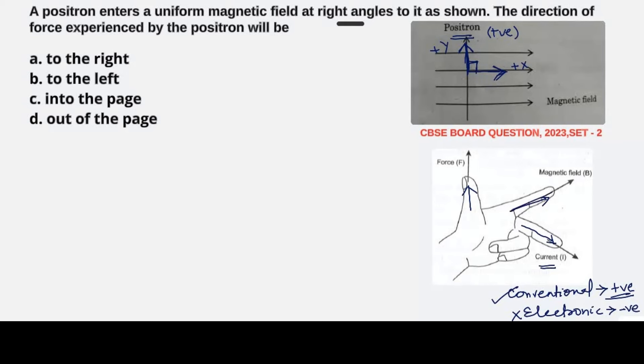As you can see here, magnetic field and current are mutually perpendicular to each other. Then the force acting on the particle will be at right angles to both of them. So let us rotate our wrist to align with this question.